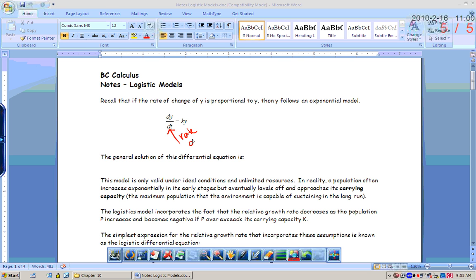The dy/dt represents the rate of change of y, and k is some constant of proportionality. If we were to integrate this and solve for y, who remembers what that equals? C times e to the kt. Perfect.